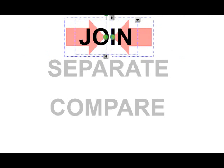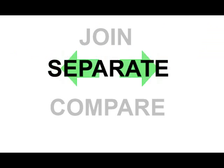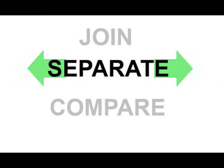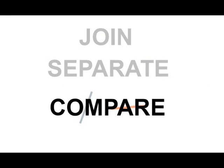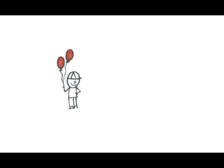Join problems describe situations where items are combined. Separate problems describe situations where items are removed. Join and separate problems show changes over time. Compare problems on the other hand show how items are the same or different. This video describes the relationship amongst parts of a join problem.